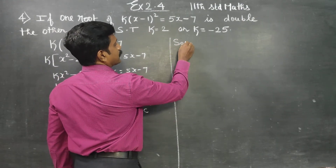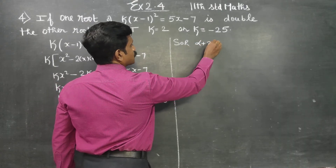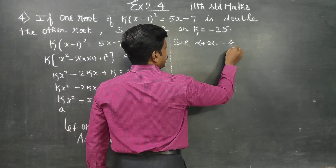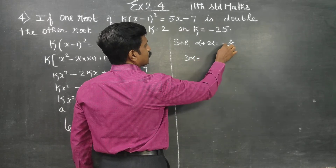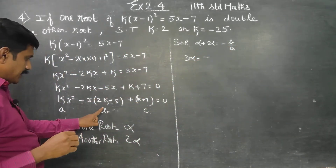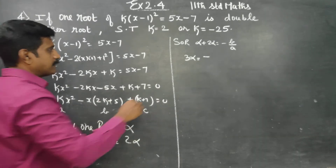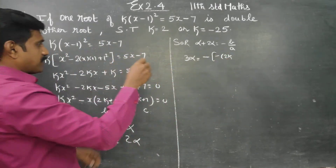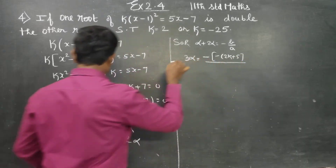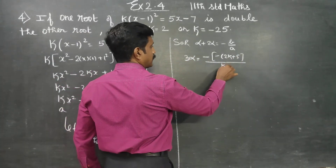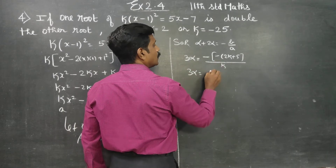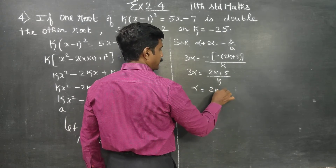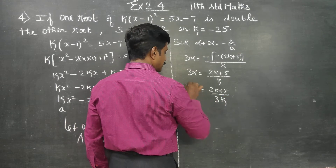Now I am going to find the sum of the roots. Sum of the roots is alpha plus 2 alpha. Using the formula minus b by a: 3 alpha is equal to minus b by a. Here b is minus 2k plus 5, so 3 alpha equals 2k plus 5 by k. Therefore alpha will be 2k plus 5 by 3k. This is my alpha.